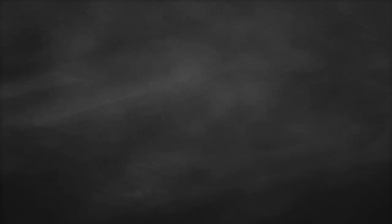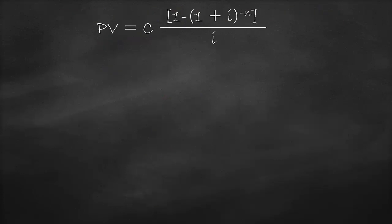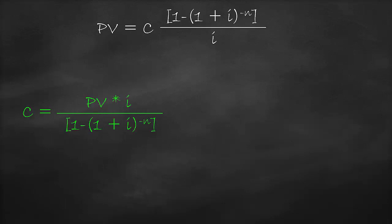This is the present value formula. It has four variables: the present value (PV), the equivalent cash flow (C), the interest rate (I), and the number of periods (N). We can rearrange this formula to solve for the equivalent cash flow C. The equivalent cash flow equals the present value times the interest rate, divided by [1 minus (1 plus the interest rate) to the power of negative number of periods].